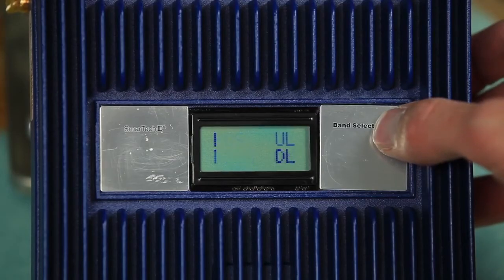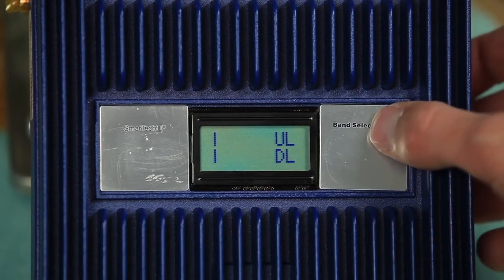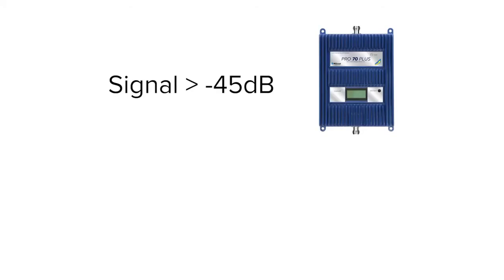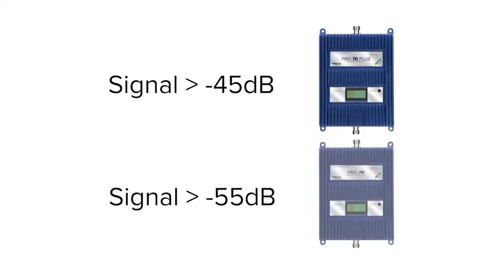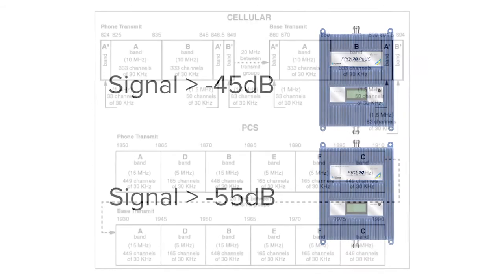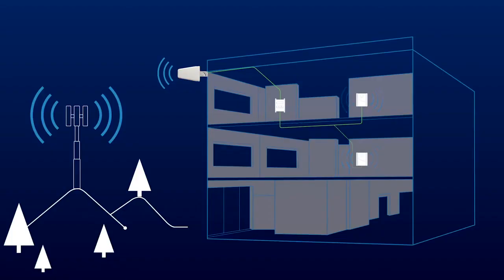Here are some good guidelines for signal strength levels coming into the booster. Anything stronger than -45 dB for a Pro 70+, or -55 dB for a Pro 70, is too strong. This much signal coming into the signal booster will cause the spectrum to shut down on the amplifier. Keep in mind there are multiple bands or channels within each frequency spectrum — even if just one band is overloading, the whole spectrum will shut down.